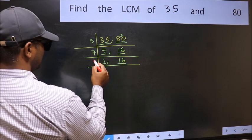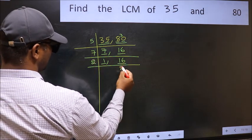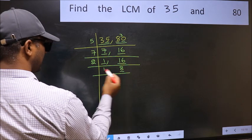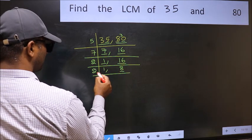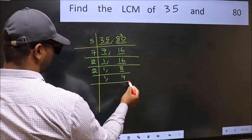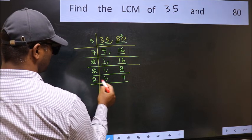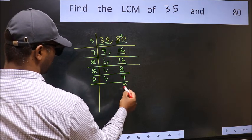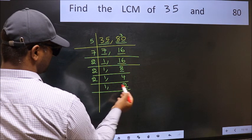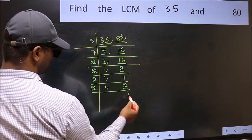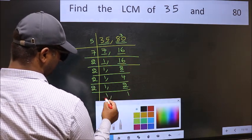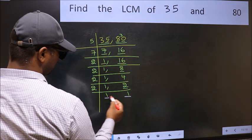16 is 2 eights, 16. Now here we have 8. 8 is 2 fours, 8. Now we have 4. 4 is 2 twos, 4. Now we have 2. 2 is a prime number, so 2 ones are 2. So we got 1 in both places.